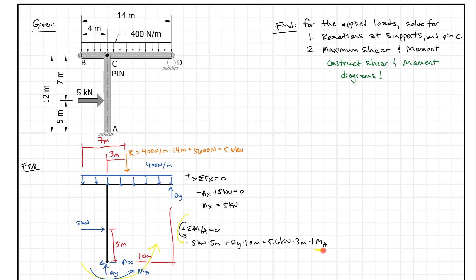Since we have two unknowns and only one equation, we need another free body diagram. The obvious place to split this structure is at pin C. At a pin, we only transfer shear and axial force, so we'll draw two free body diagrams: one for the top member and one for the bottom member.